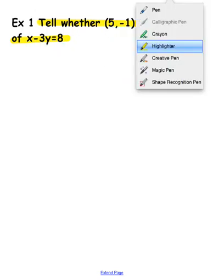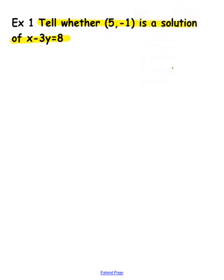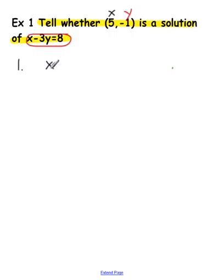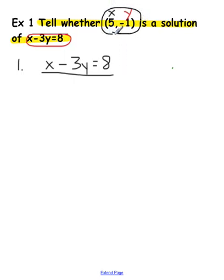I have to remind you of things we've known from the past. In an ordered pair, your first value is always your x and your second value is always y — that never changes. That's important because it will help us solve this equation. So first number is x, second number is y. I want you to rewrite this equation in your homework as a sample problem, copying it down exactly: x minus 3y equals 8. That should be the first line in your practice.